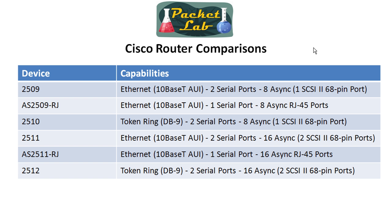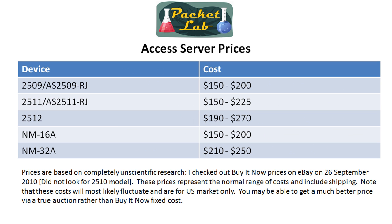This slide shows the router comparisons — I don't have the network modules in there because they're not really routers. It has the 2509, 2510, 2511, and 2512 and the different flavors. The first three options — 2509, 2510, and their RJ variants — are only going to give you eight async ports. The last three give you 16 async ports, and the different flavors are based on the type of async ports and whether you have token ring or Ethernet.